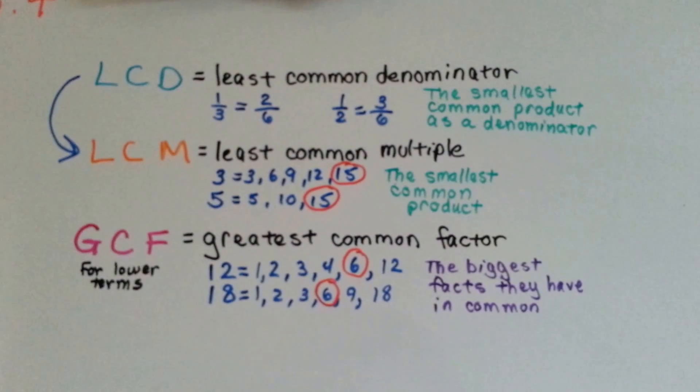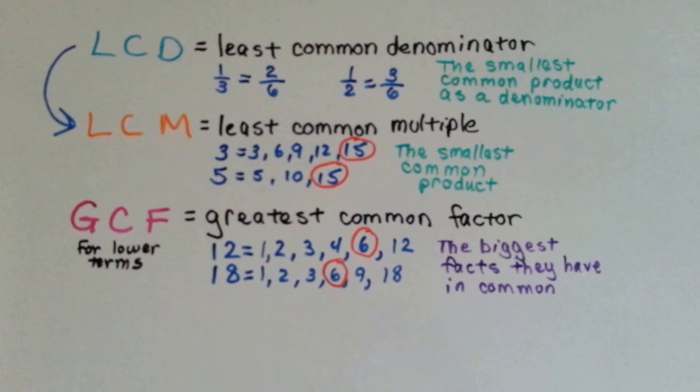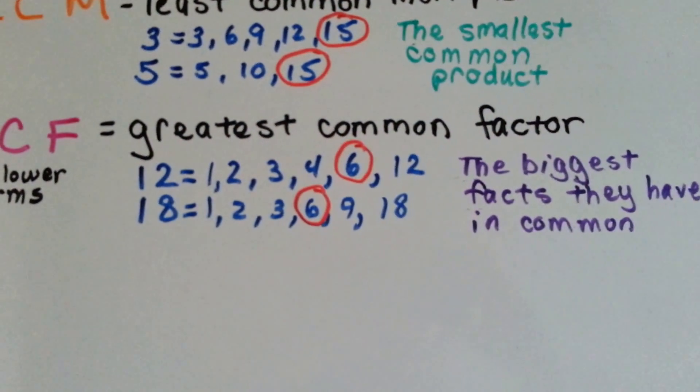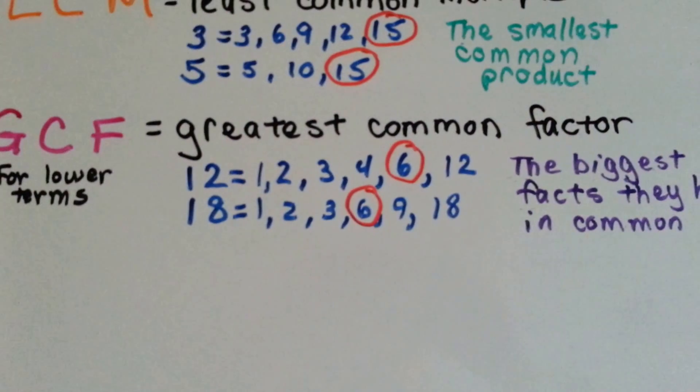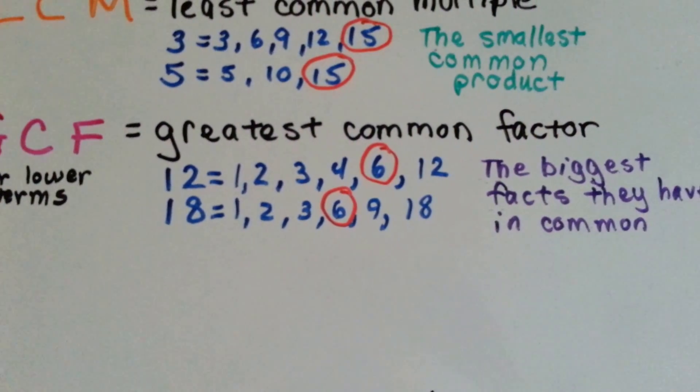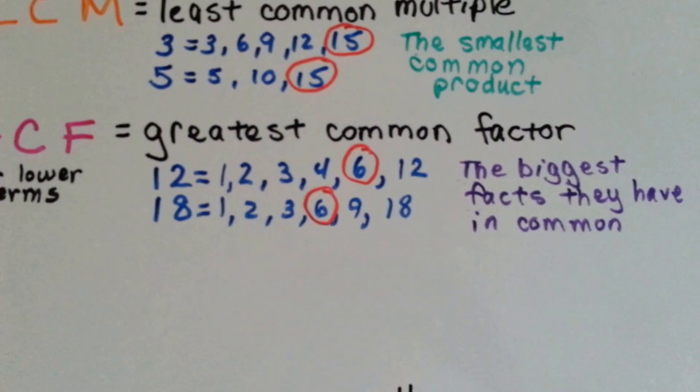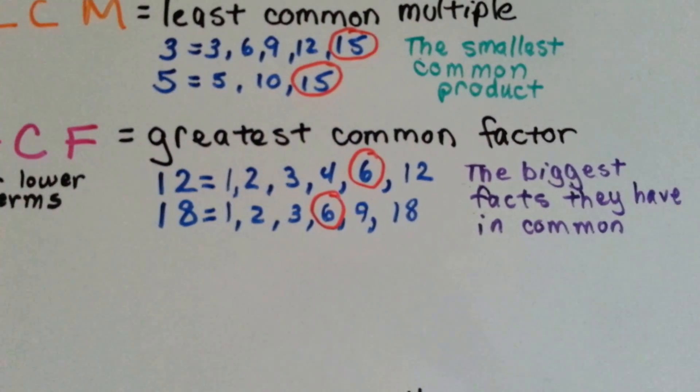The GCF, the greatest common factor, are the facts that we multiply together to get those numbers. The facts for 12 are 1, 2, 3, 4, 6, and 12. The facts for 18 are 1, 2, 3, 6, 9, and 18. The biggest one they have in common is 6. So that's the greatest common factor. And we use that to put fractions into their lowest terms.